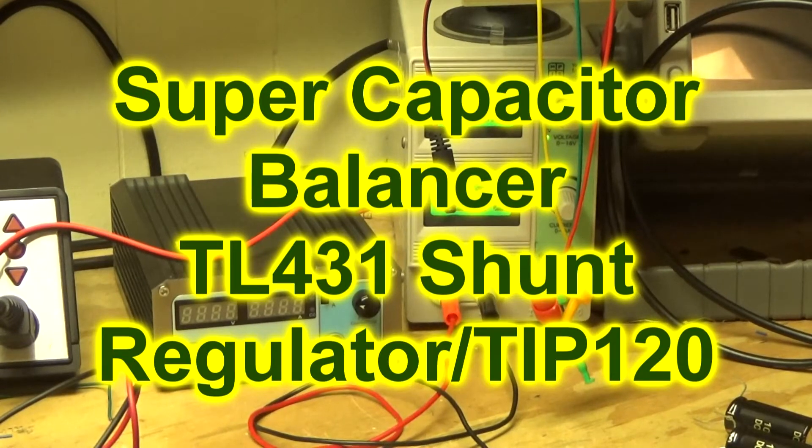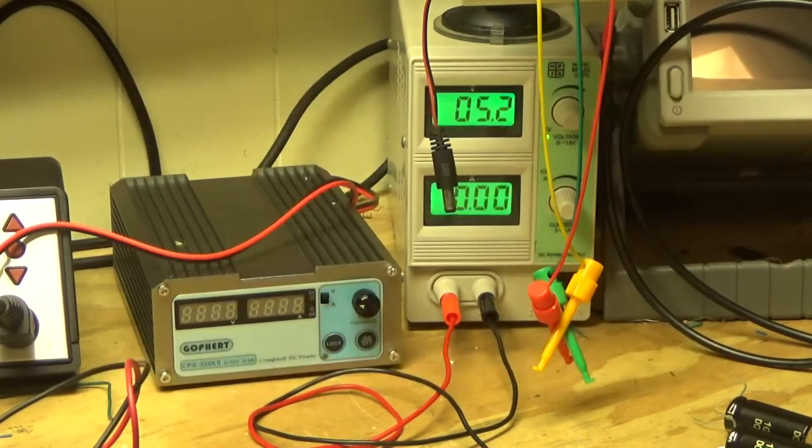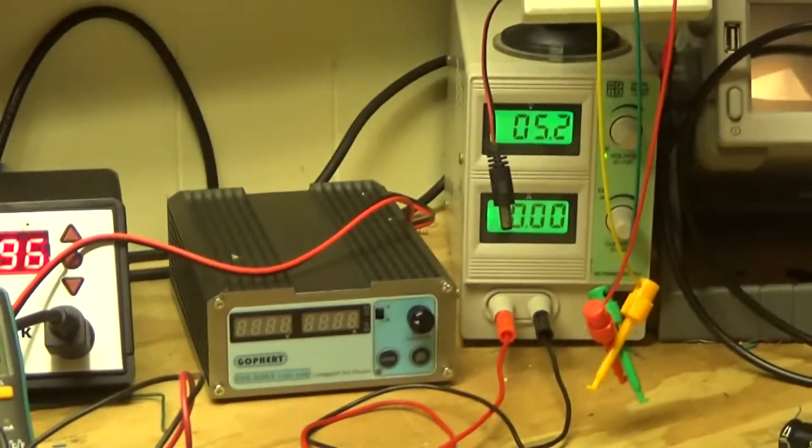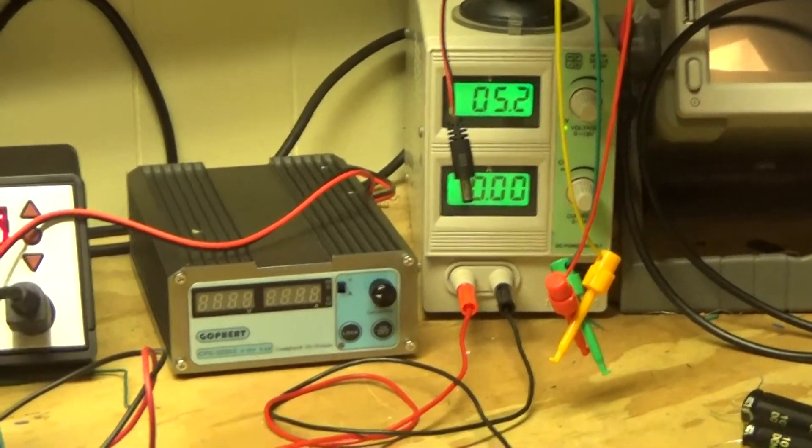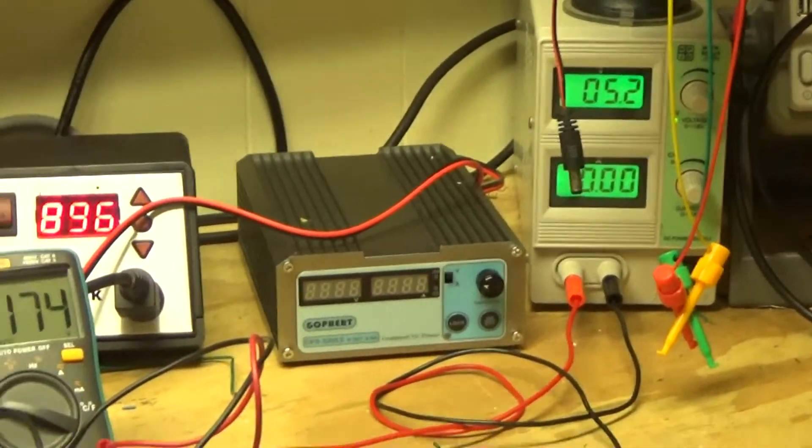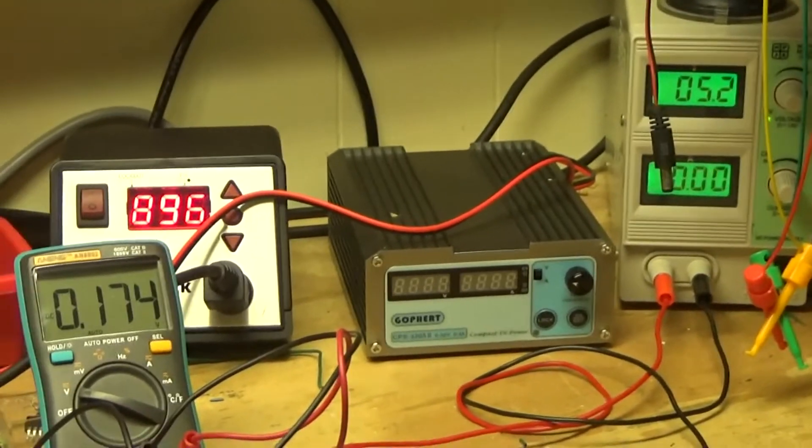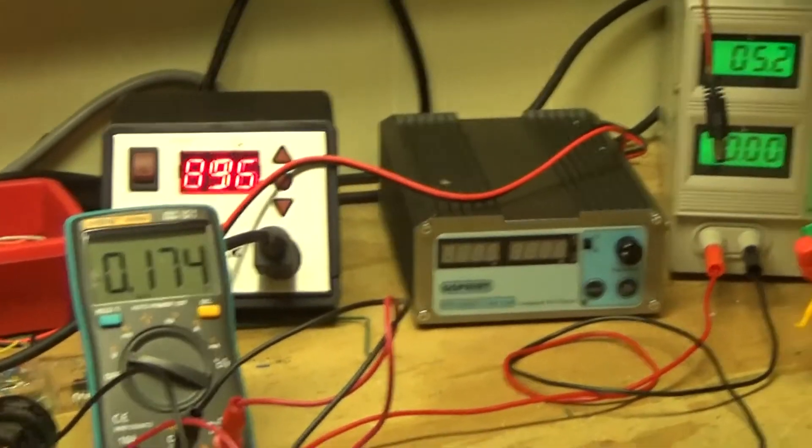Here's another test of super capacitor balancing circuitry. I'm trying a new circuit; before I did the diode circuit. This time I'm trying the 431 shunt regulator with a TIP120 power transistor and a PNP transistor as a switch.